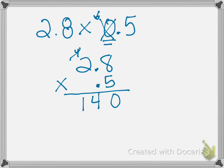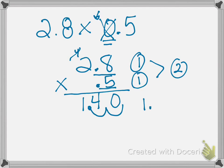Now we come up to our factors. In 2 and 8 tenths we have one number after the decimal. In 5 tenths we have one number after the decimal. So all together we have two numbers after the decimal. So we come to the right of the number and we go 1, 2. So our answer is 1 and 40 hundredths or you can write it as 1 and 4 tenths.